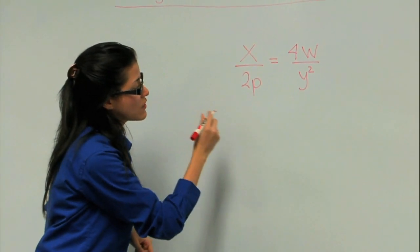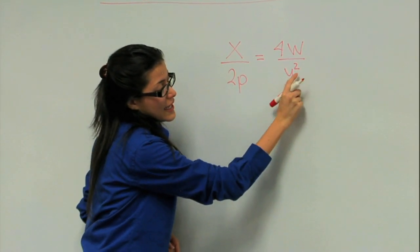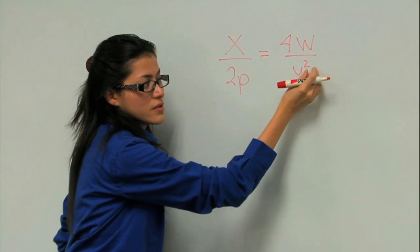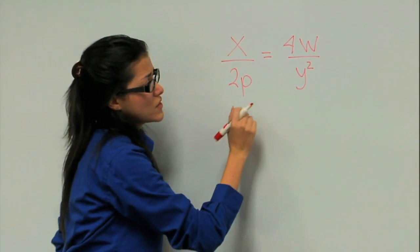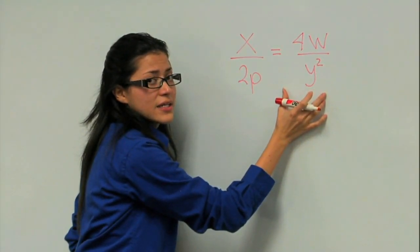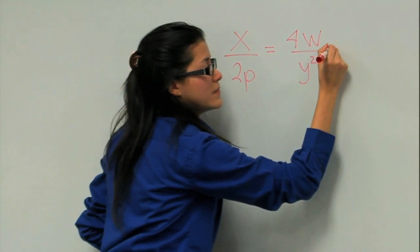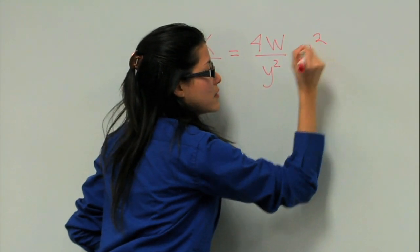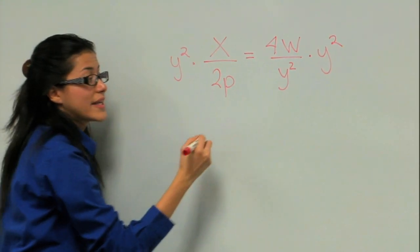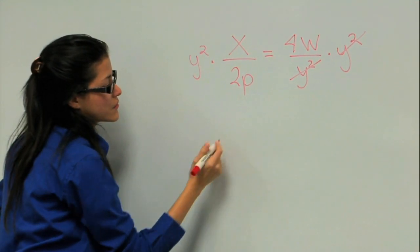So we want to solve for y. It has a squared here, but don't worry about that — I'm going to show you how to get rid of the square. Since y squared is dividing on this side, that means we have to multiply by y squared on both sides. That way we can cancel it from here. Now we have it over here. Let me rewrite this.